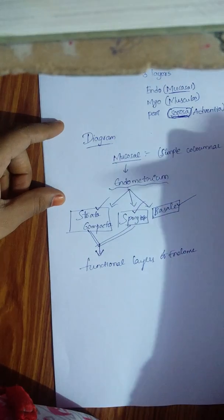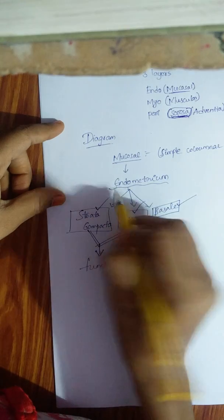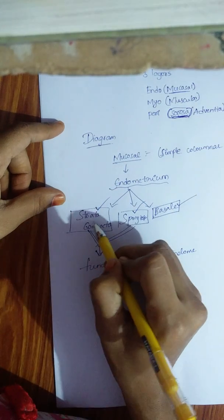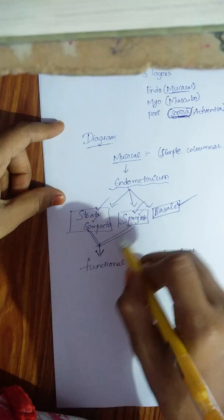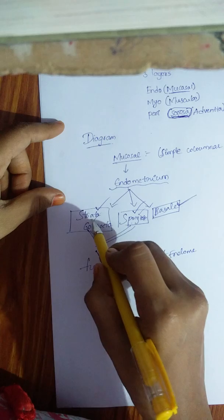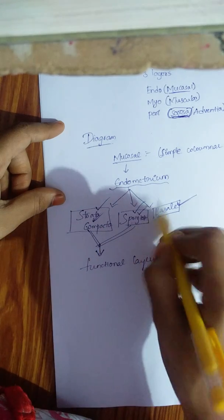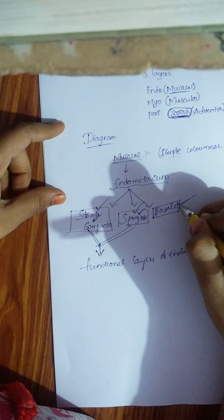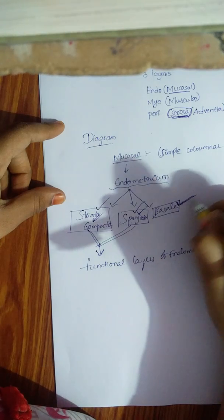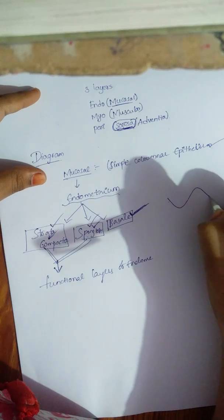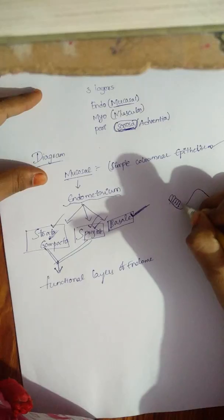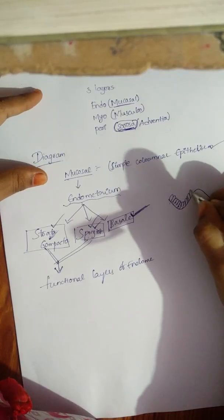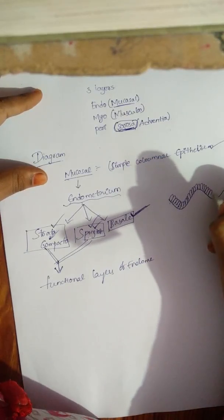To recap the endometrium: the mucosal lining is simple columnar epithelium. The endometrium is divided into three parts — stratum compacta, stratum spongiosum, and stratum basale. Stratum compacta and stratum spongiosum are the functional layers, formed during the proliferative phase. Stratum basale is always present. The endometrium is lined by simple columnar epithelium.